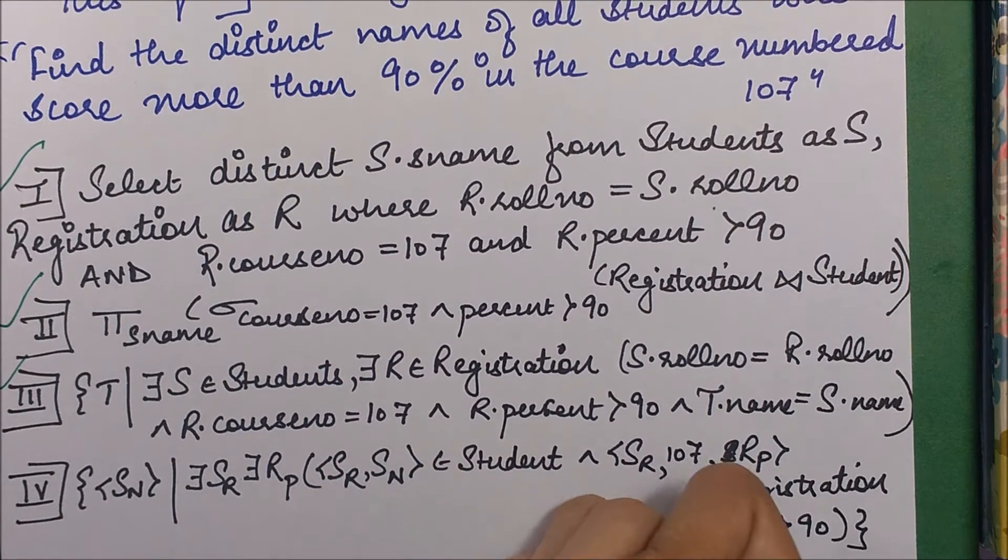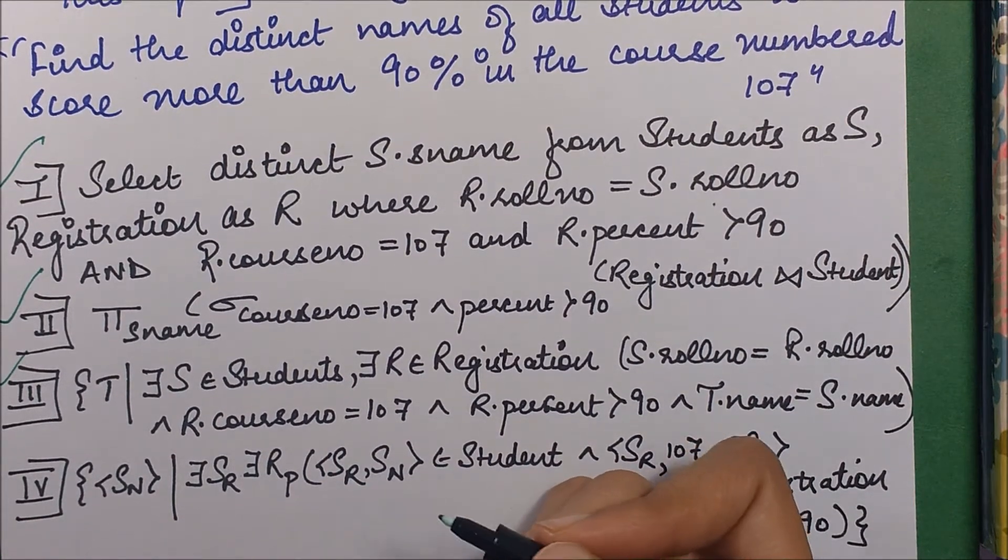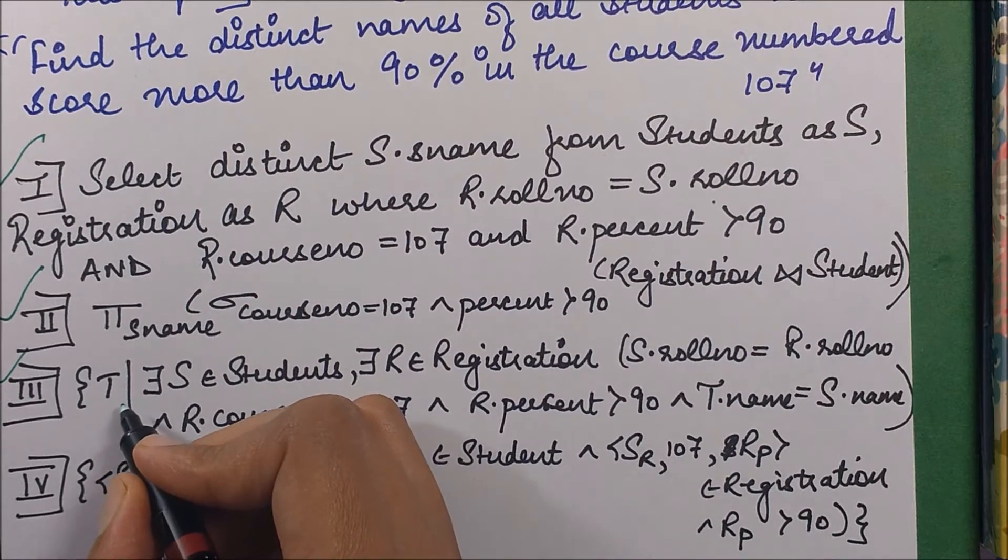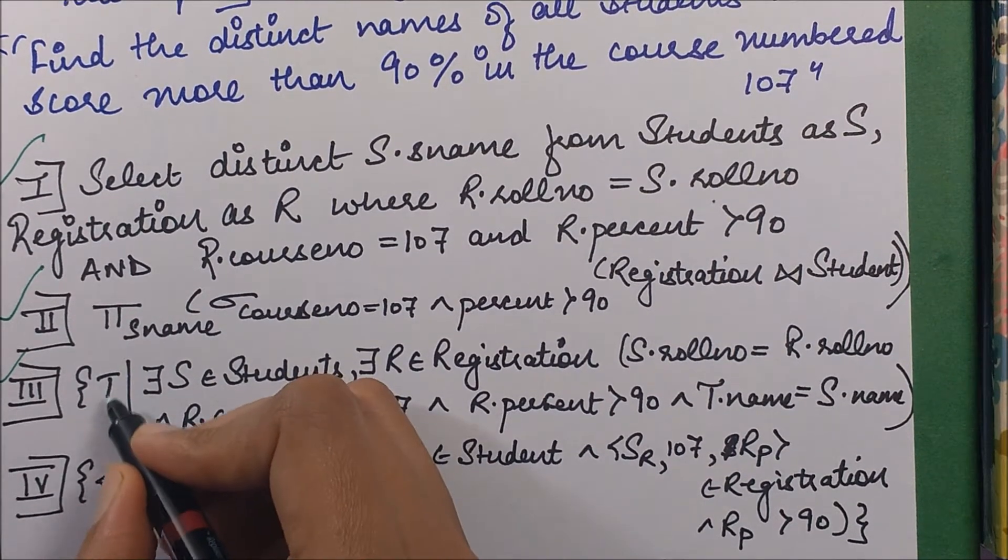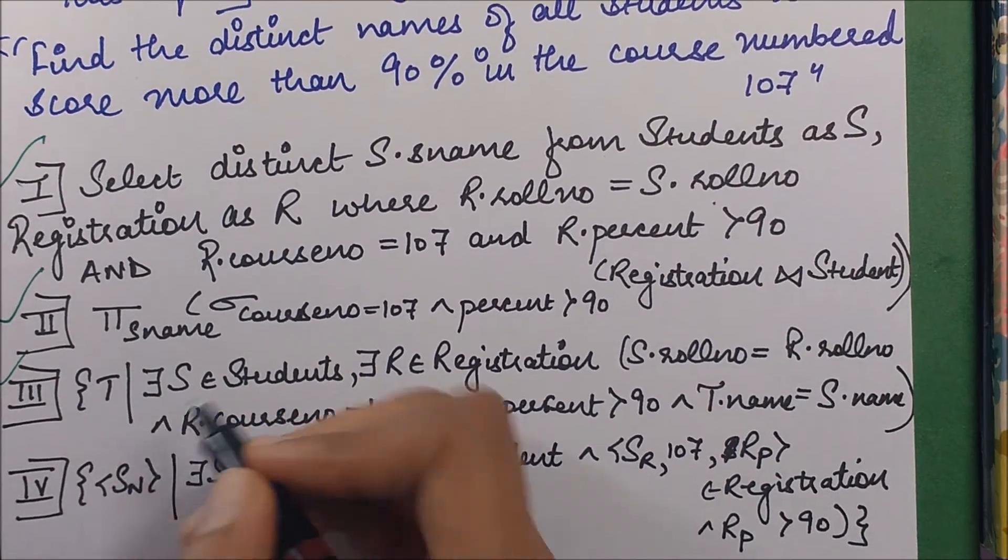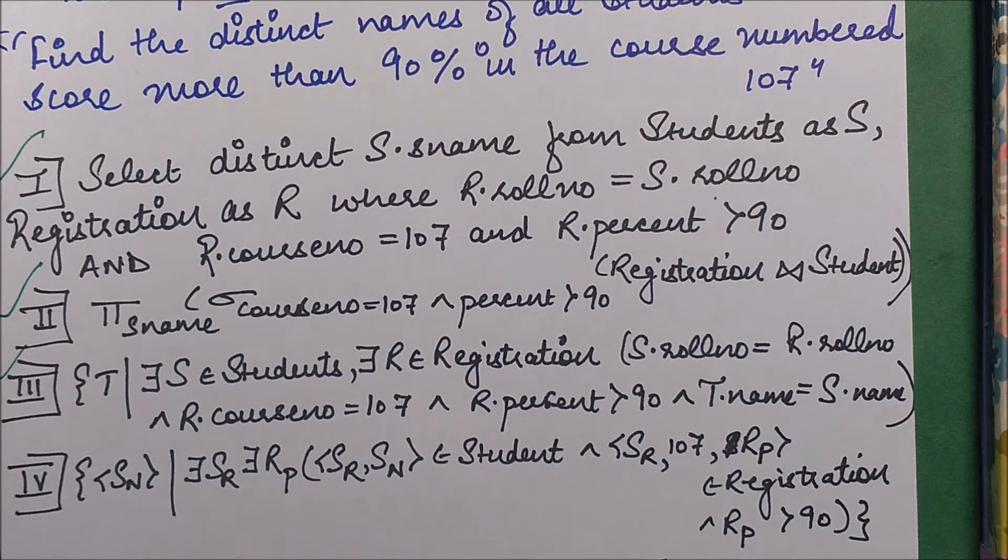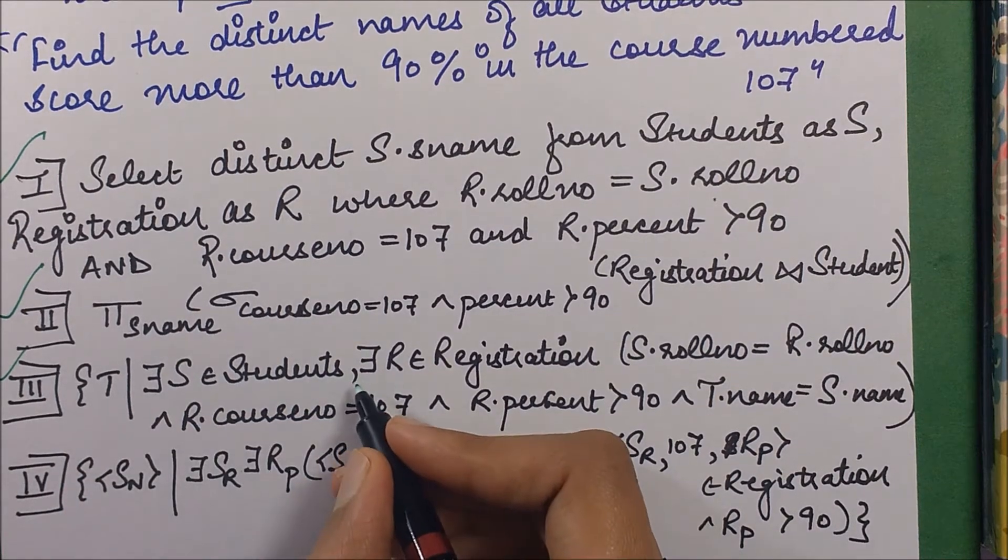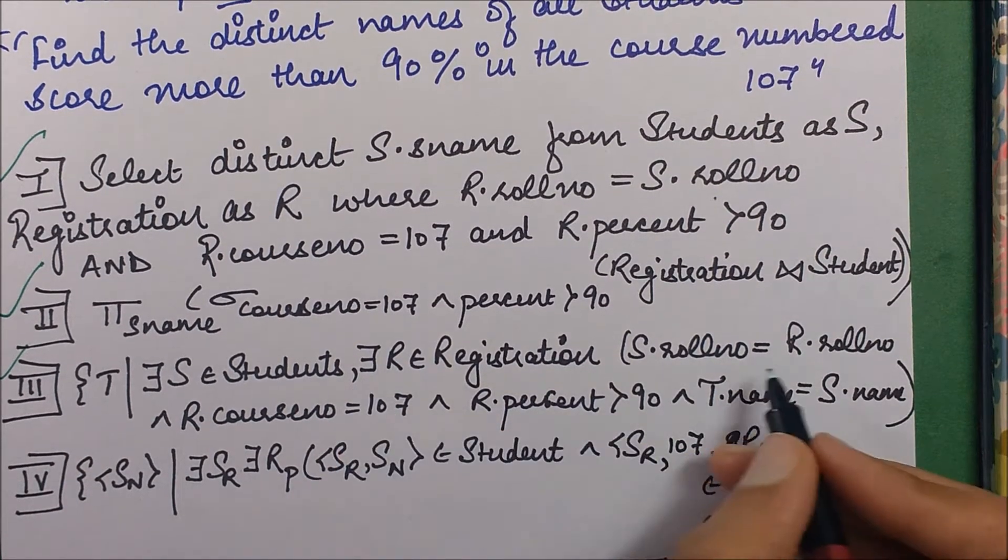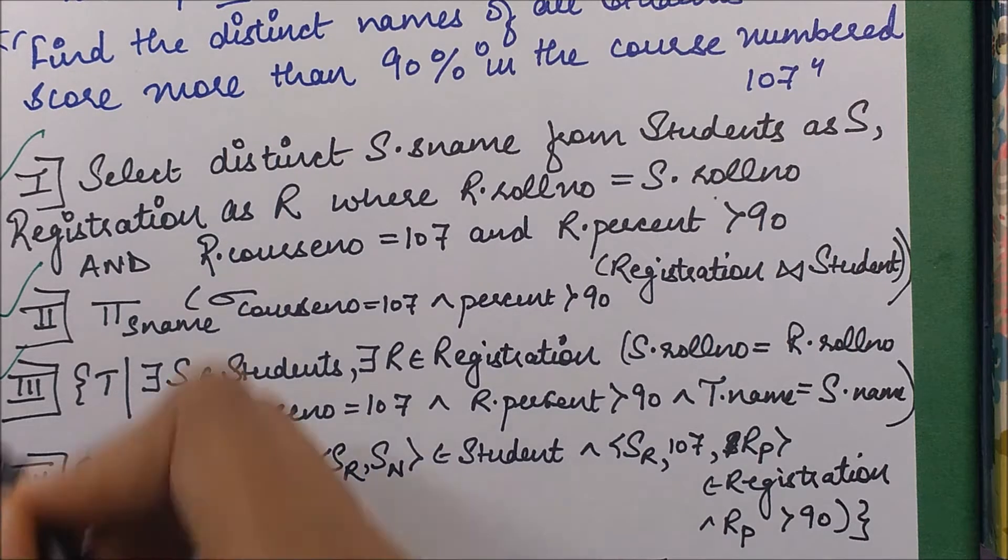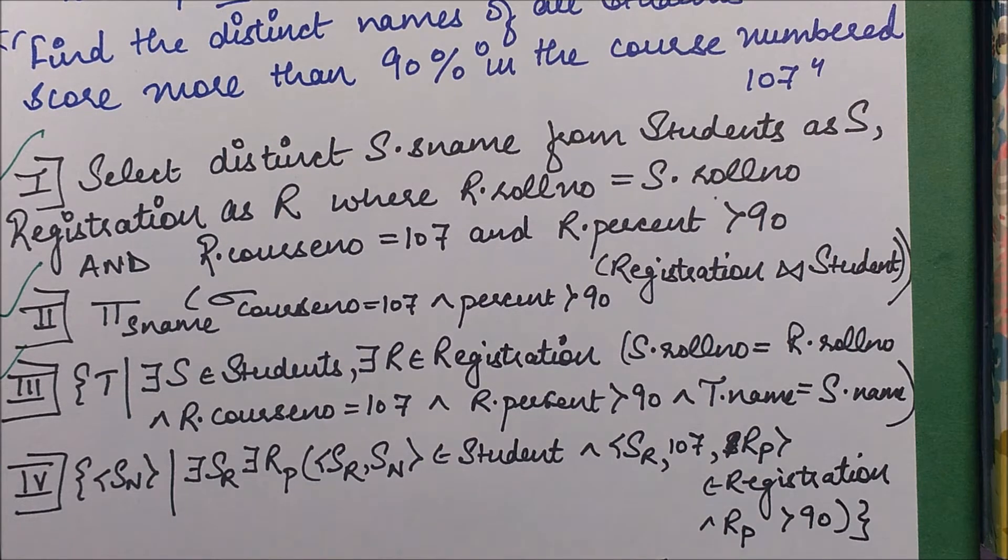Very simple tuple relational calculus example - you selected a certain set of tuples. You said I need some tuples which belong to these tables satisfying these conditions. That's the same syntax of a generalized tuple relational calculus query wherein you have a tuple, then you say which table it belongs to, and the condition.